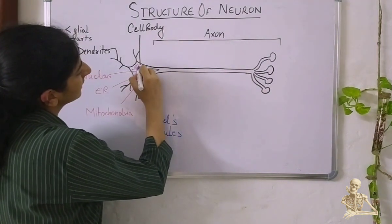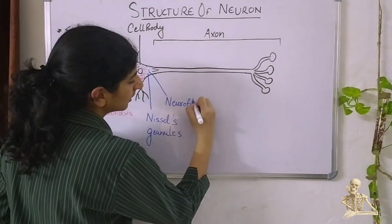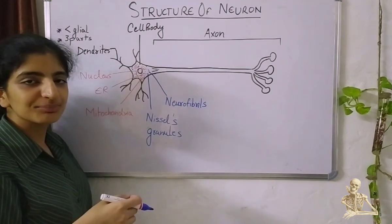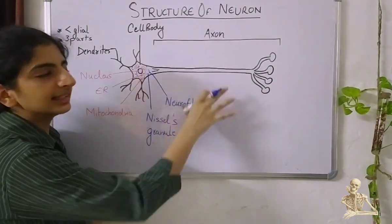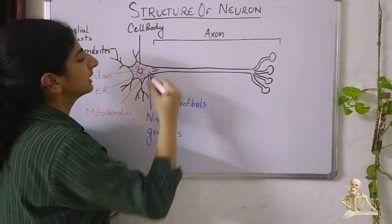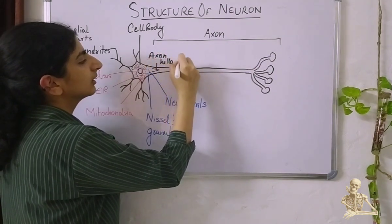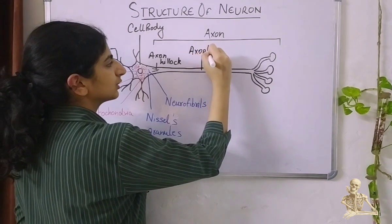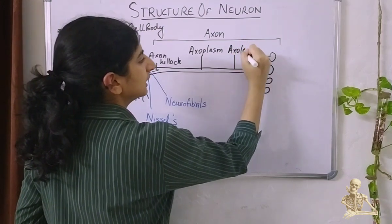Other than these, there are some fibers known as neurofibrils. Neurofibrils are the transport bands within the cytoplasm — they transfer materials from one part of the cell to another. As we move towards the axon, this junction present here is the axon hillock. The cytoplasm of the axon has a special name — axoplasm — and its membrane is called the axolemma. These are not different structures; they are just given specific names with respect to the axon.